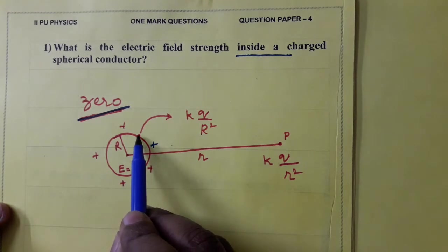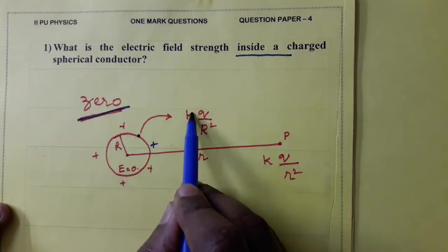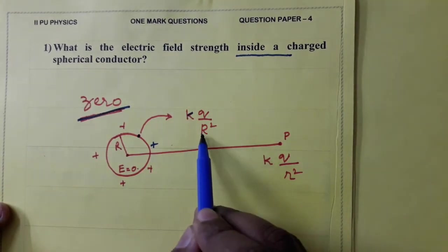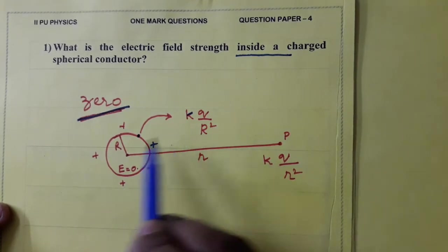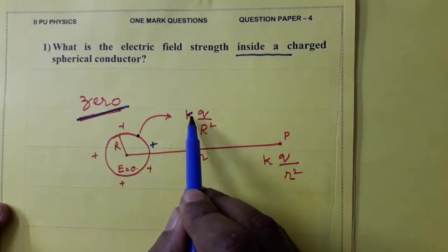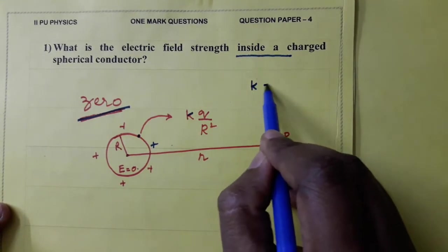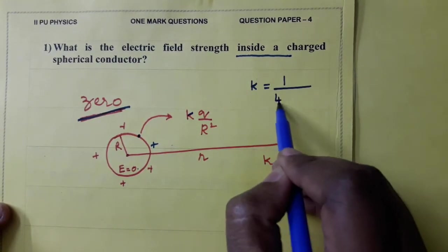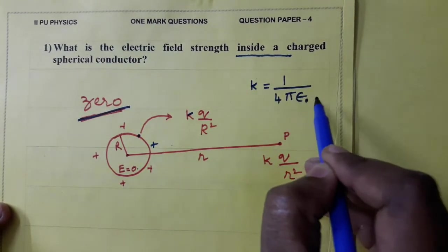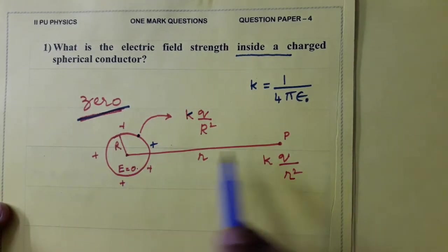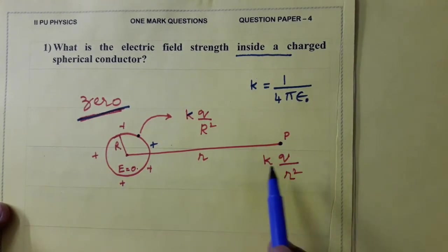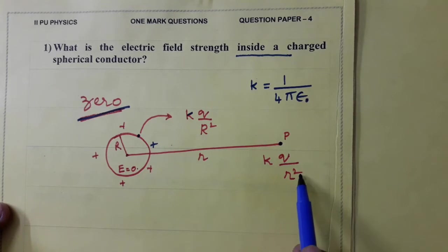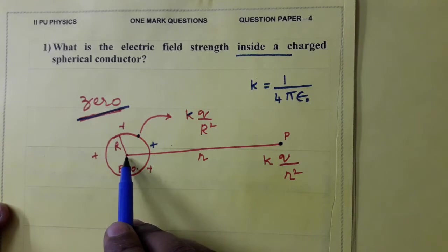Electric field intensity at a point on the surface is constant k q by r square where r is radius of the sphere. k is constant and we know k equal to 1 by 4 pi epsilon 0. And at a point outside the shell, constant k q by r square where small r is distance of the point from the center of the shell.